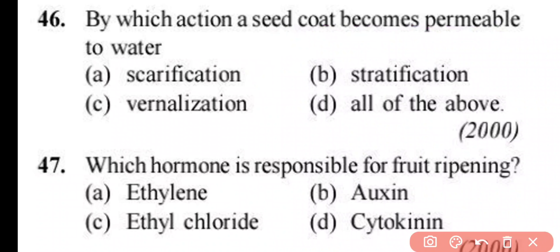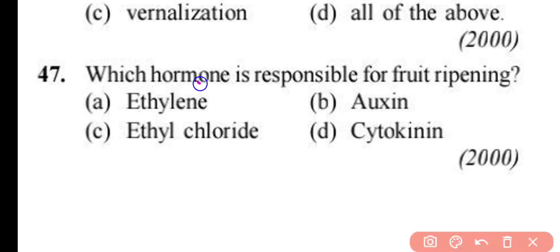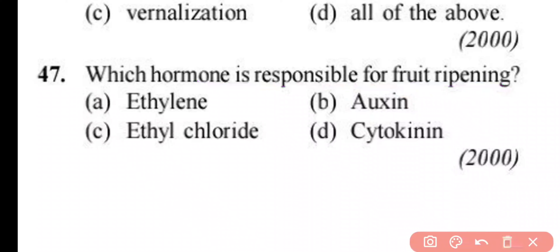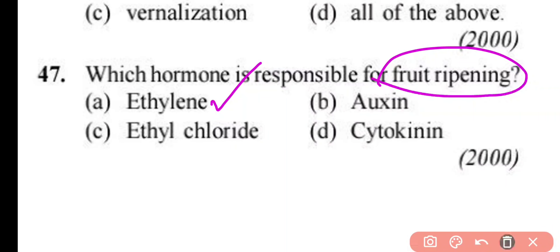Question number 47. Which hormone is responsible for fruit ripening? Ethylene, auxin, ethyl chloride, or cytokinin. Correct answer is option A. Ethylene hormone is responsible for fruit ripening.